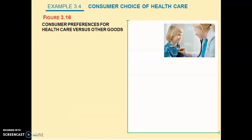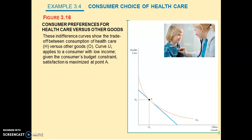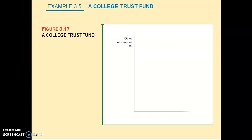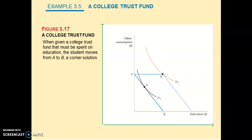We continue with Examples 3.4 and 3.5. Example 3.4 concerns consumer preferences for health care versus other goods. Example 3.5, Figure 3.17, deals with a college trust fund. Work through these examples to enhance your understanding of how our analysis can be applied in various scenarios. We will conclude here and continue with Part 2, beginning with Revealed Preferences, Section 3.4.